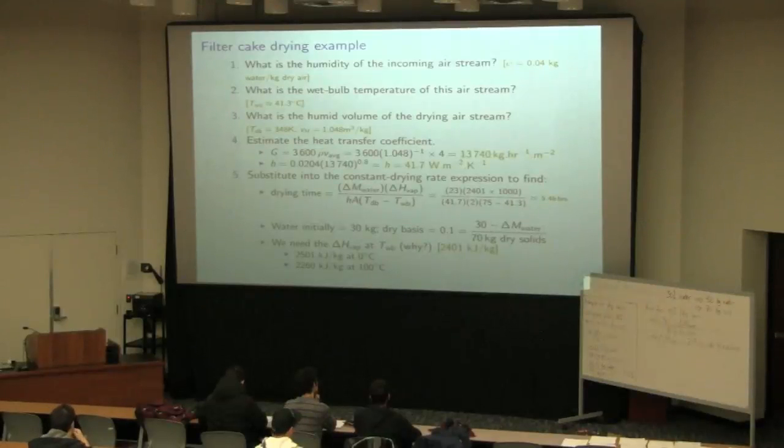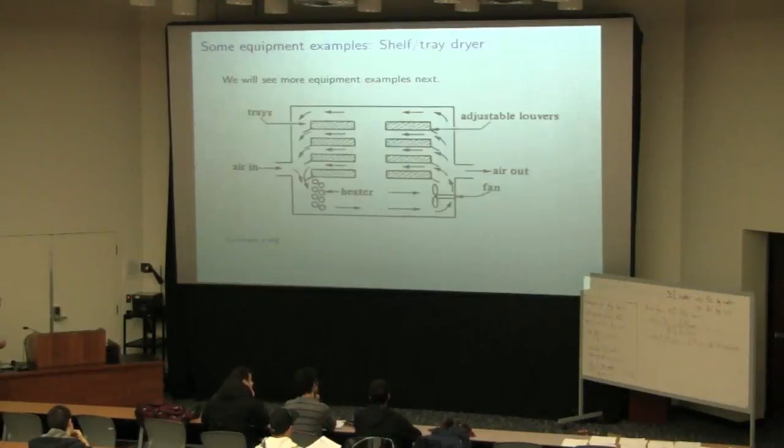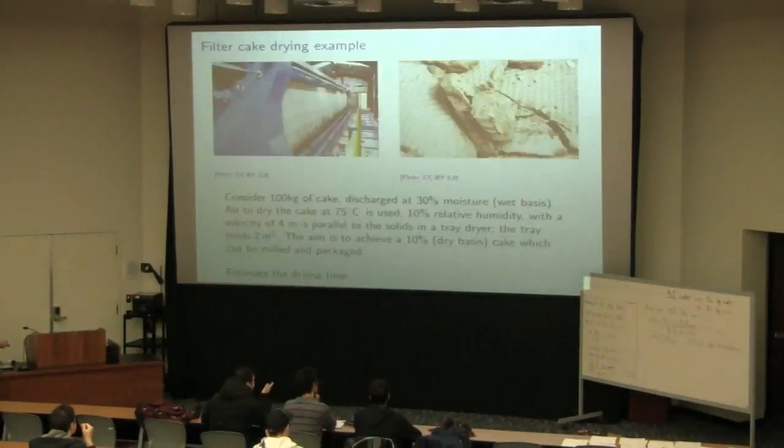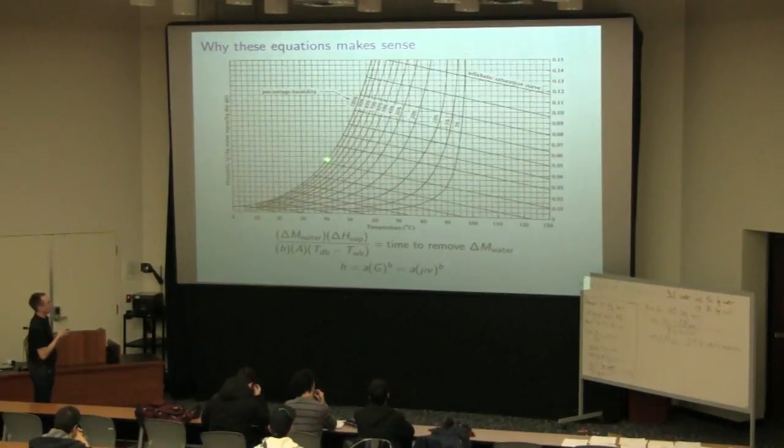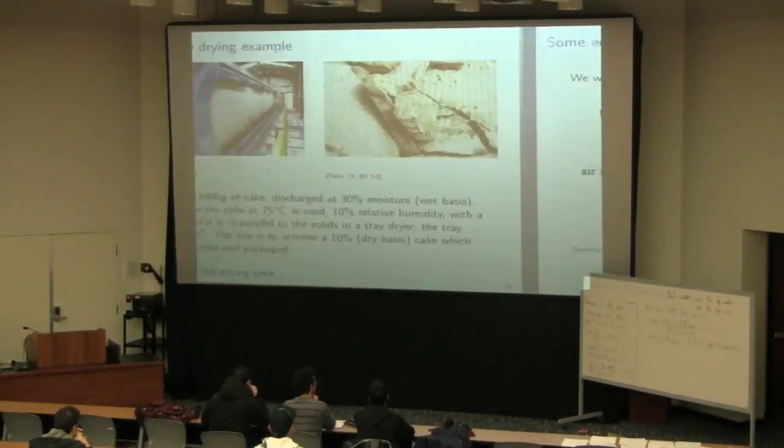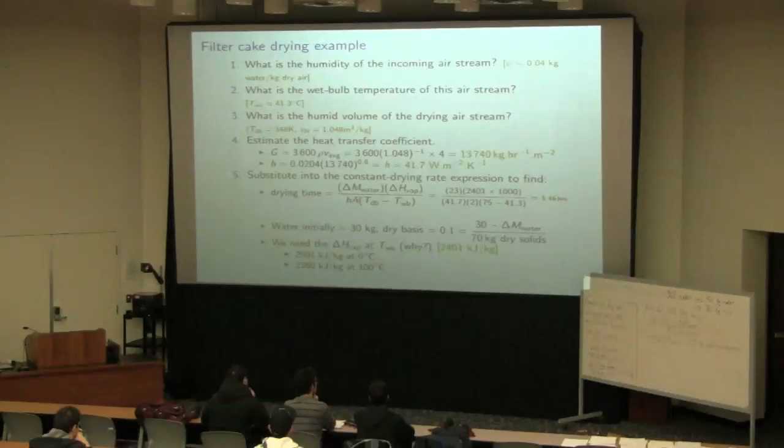What is the wet bulb temperature of that air stream? I estimated 41 and a bit. You follow those diagonal lines which we got the derivation of yesterday. So 75 degrees, go up to 10% humidity, and then come diagonally across to that point. I landed up where my point is. So it's between 40 and 22.5, so I estimated 41.25, 41.3. It's hard to get it exact. So that's my wet bulb temperature. And the reason why I need that is because in this equation to estimate the drying time, I need both my dry bulb and my wet bulb temperature.